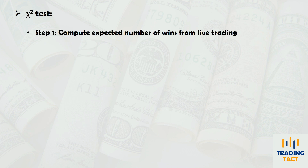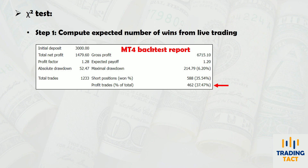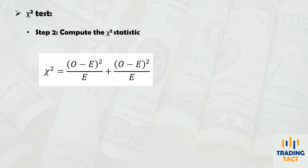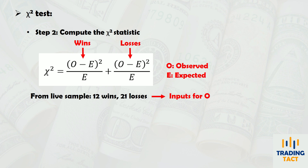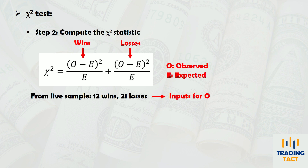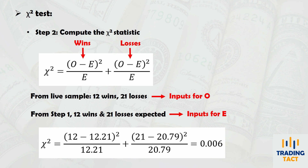First, compute the expected number of wins from live trading. The historical backtest shows a 37% win rate. Applying this to our live basket of 33 trades, we can expect about 12 wins and 21 losses. Next, compute the chi-square statistic using the formula: the first term considers winning trades, the second considers losing trades, where O indicates the observed result and E indicates the expected result. We had 12 wins and 21 losses during the 5-month live period. The small chi-square value of 0.006 means there is a strong similarity between the backtest and live win rates — we expected 12 wins over 33 trades, and we got exactly that. Such a strong similarity is the exception rather than the norm.